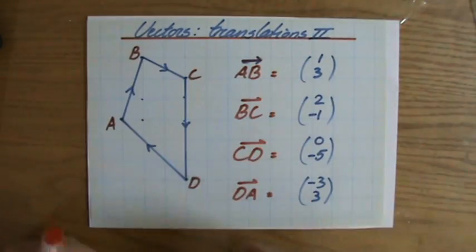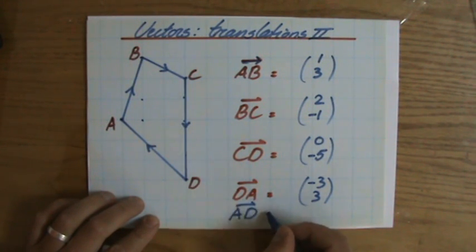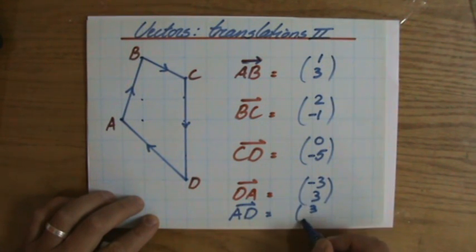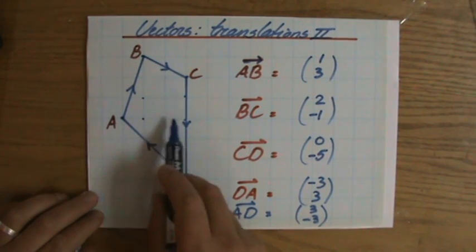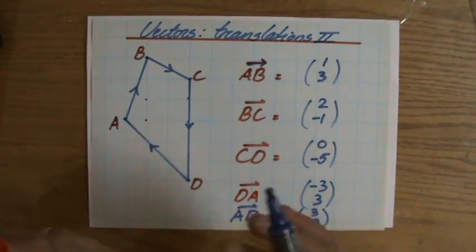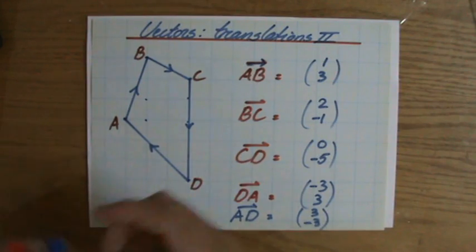And as I have explained in my previous videos, if the direction changes, so from A to D, then all the signs change, so three minus three. Because if the direction changes, I go one, two, three, one, two, three, so minus three. Translations, vectors. I think I have another video for you, so let's see you there.